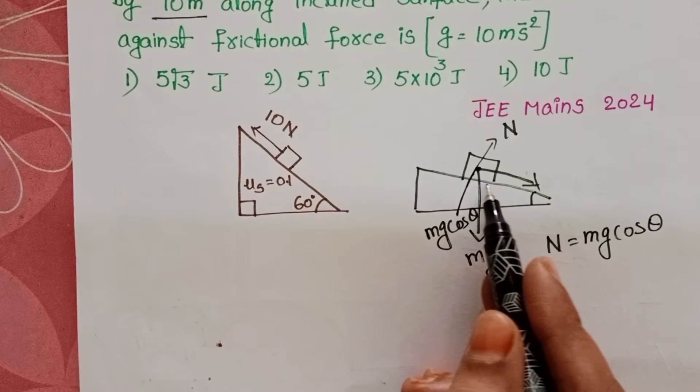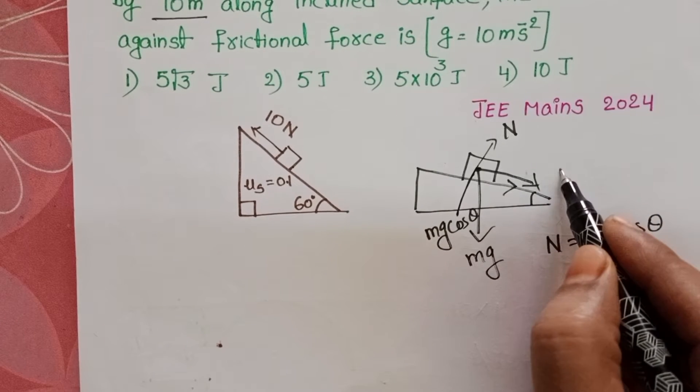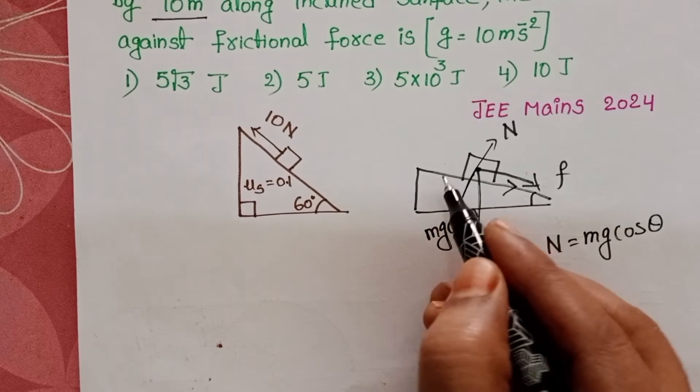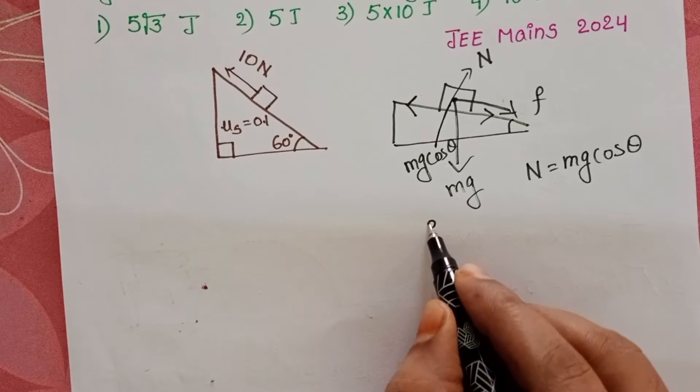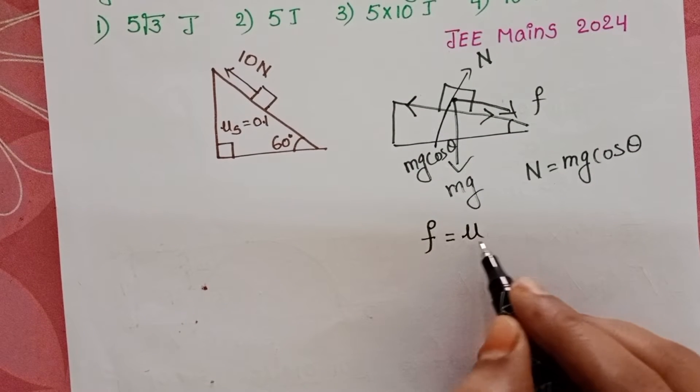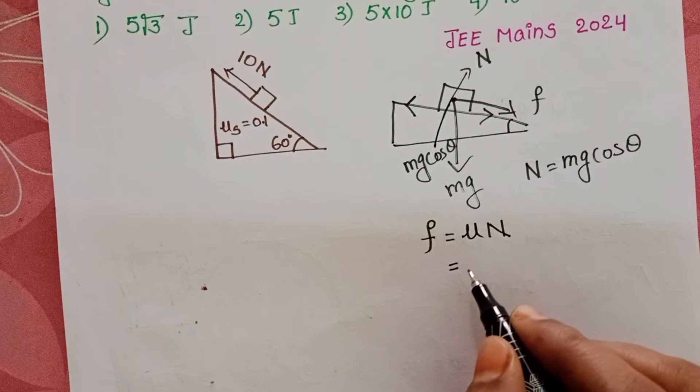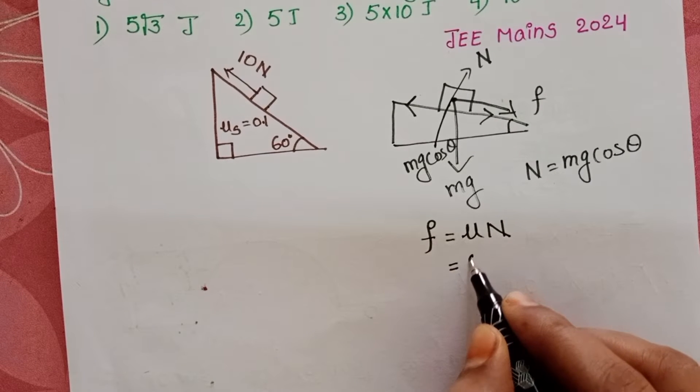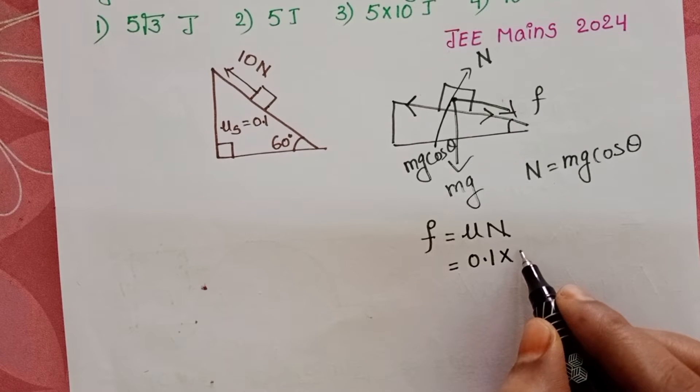When the block is moving in upward direction, the frictional force is acting opposite to the direction of motion of the body. This is the direction of motion of the body. Frictional force is equal to coefficient of friction times normal reaction. Given coefficient of friction is 0.1, and normal reaction is mg cos θ.